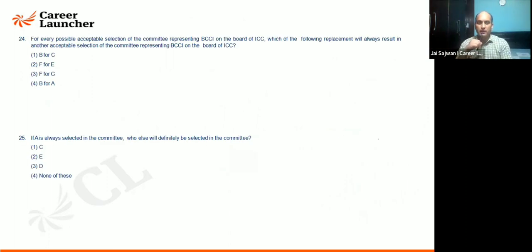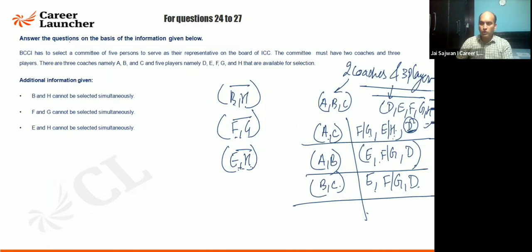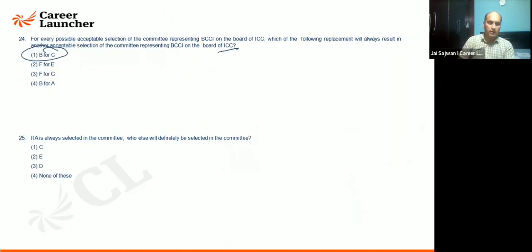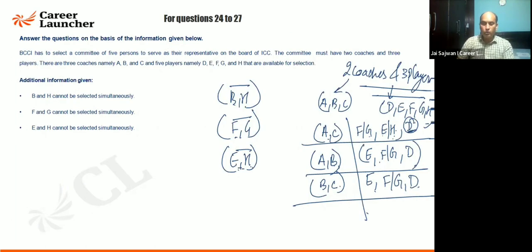For every possible acceptable selection of the committee representing BCCI on the ICC board, which replacement will always result in another acceptable selection? First option is replacing B with C — if we replace B for C it gives coaches AC. Can we replace F for E? No, we cannot replace F for E.